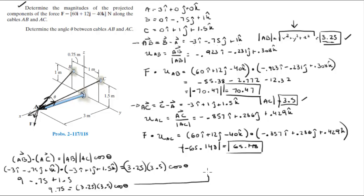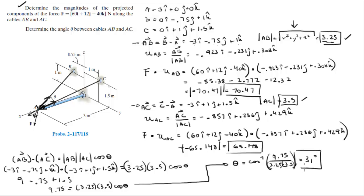Solving for θ: θ = cos⁻¹(9.75 / (3.25 × 3.5)), which gives 31 degrees. So the final answers are: the magnitude of the projection along AB, the magnitude of the projection along AC, and the angle between the cables is 31 degrees.